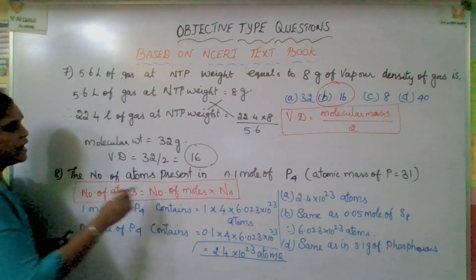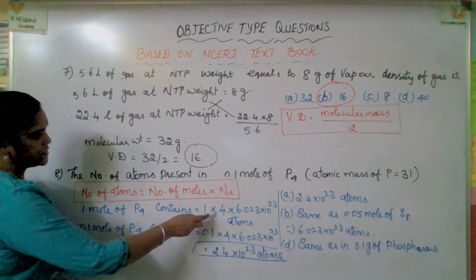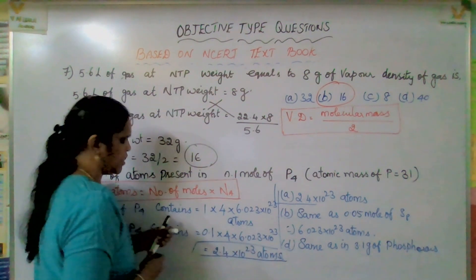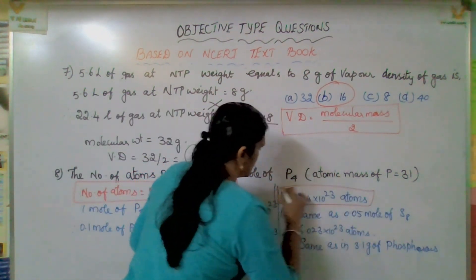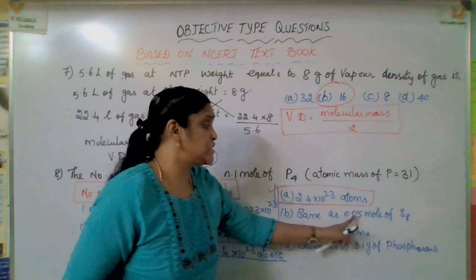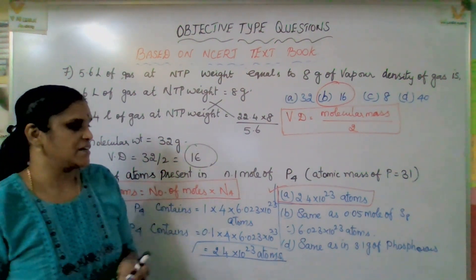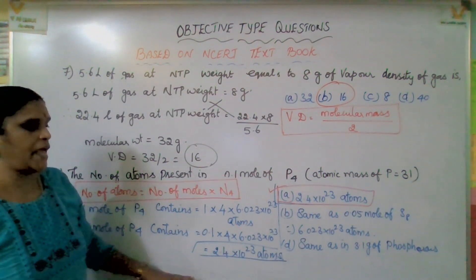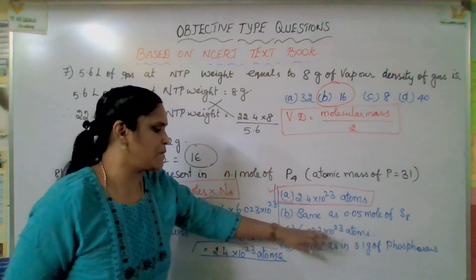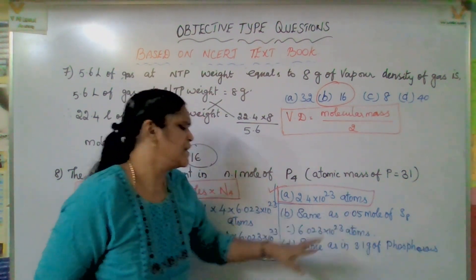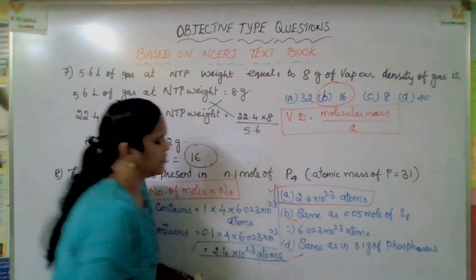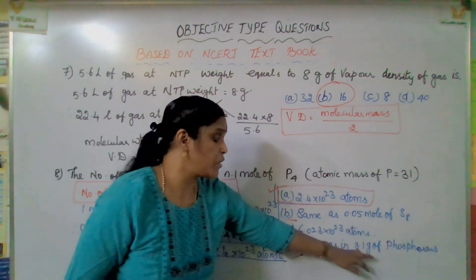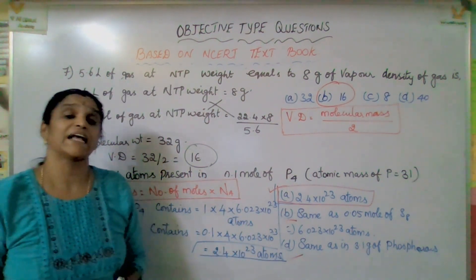The formula is: number of moles into Avogadro's number. Option A is the correct option. The other options — same as 0.05 mole of S8, same as 6.023 into 10 to the power of 23 atoms, and same as 3.1 gram of phosphorus — try those on your own and comment your answer.